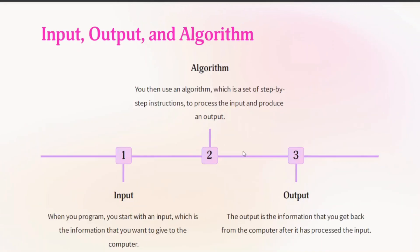There are three parts of programming: input, output and algorithm. When you program, you start with an input, which is the information that you want to give to the computer. You then use an algorithm, which is a set of step by step instructions, to process the input and produce an output. The output is the information that you get back from the computer after it has processed the input.